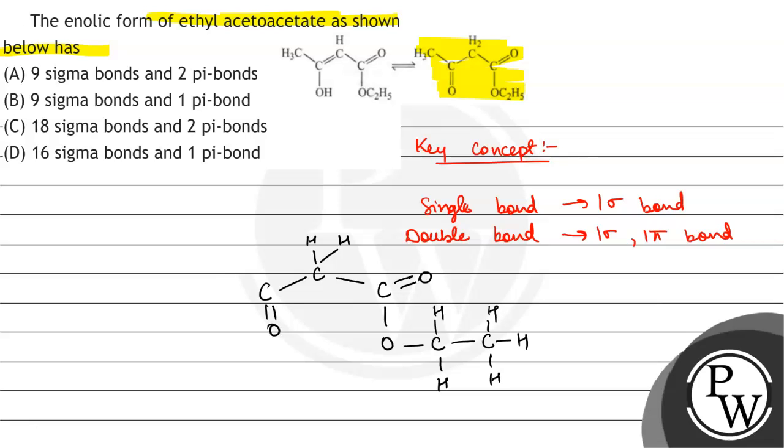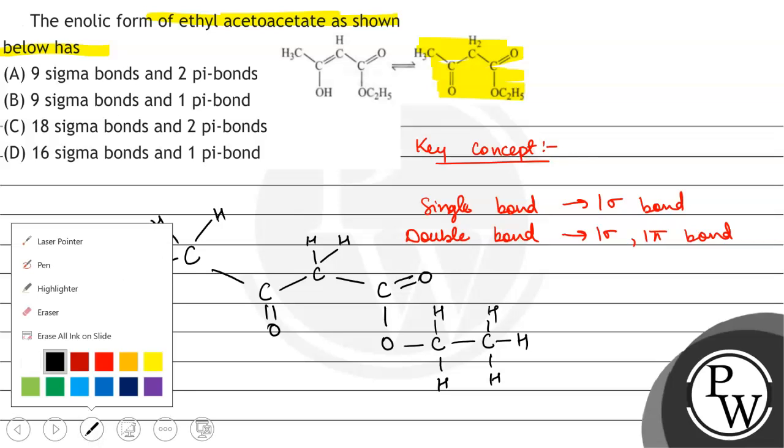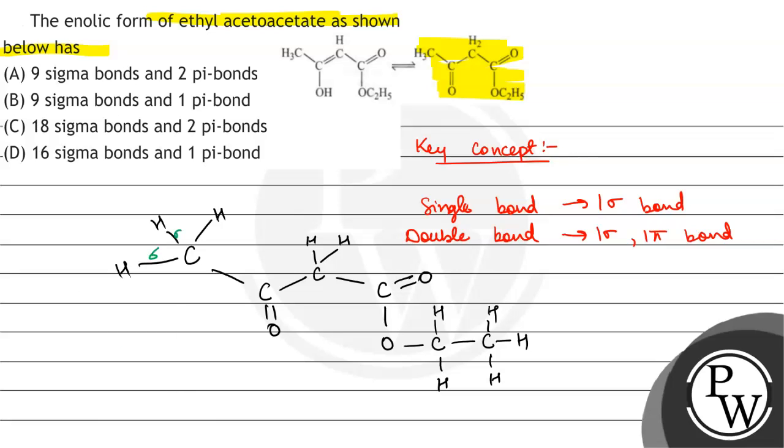This will be a double bond and this will be CH3. If we have a single bond we will count sigma bonds: 1,